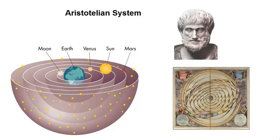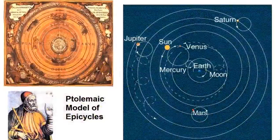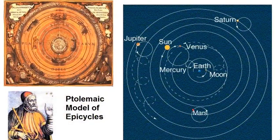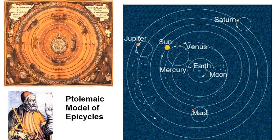The Greeks, however, observed the wanderers, or planets, behave oddly, so a new model, based on Ptolemy's circles within circles, was proposed and accepted.